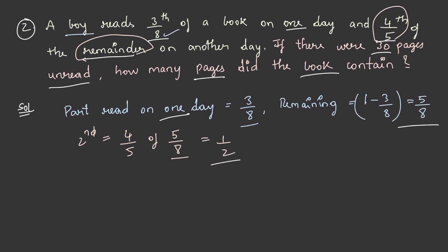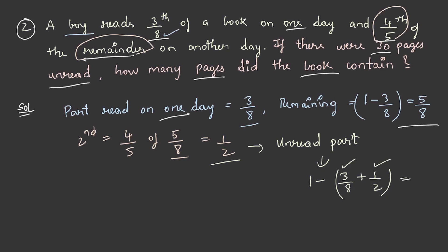Even after 2 days there is some part which is unread. So the unread part can be determined by 1 minus (3 by 8 plus 1 by 2). This is the part read on the first day and the part read on the second day. This becomes 1 by 8. So the unread part after 2 days is 1 by 8.